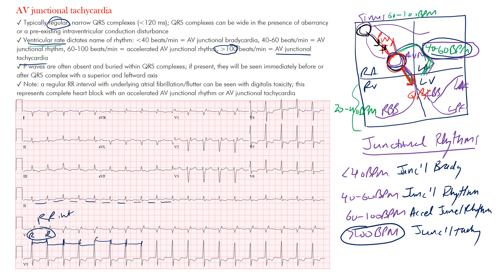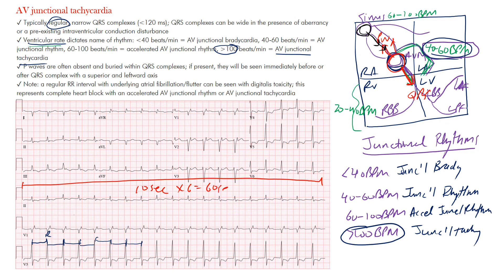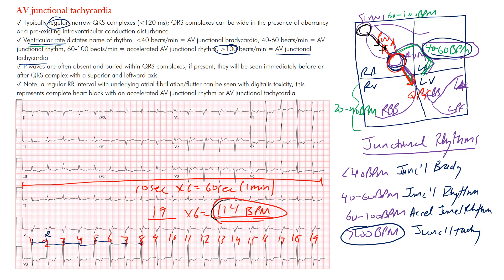To calculate the rate for a regular rhythm: this strip from beginning to end is 10 seconds, and 10 times six equals 60 seconds — one minute. So count the ventricular complexes across the strip and multiply by six to estimate beats per minute. Counting the QRS complexes, we get 19. Nineteen times six gives approximately 114 beats per minute. That number is certainly over 100, fitting the junctional tachycardic range.